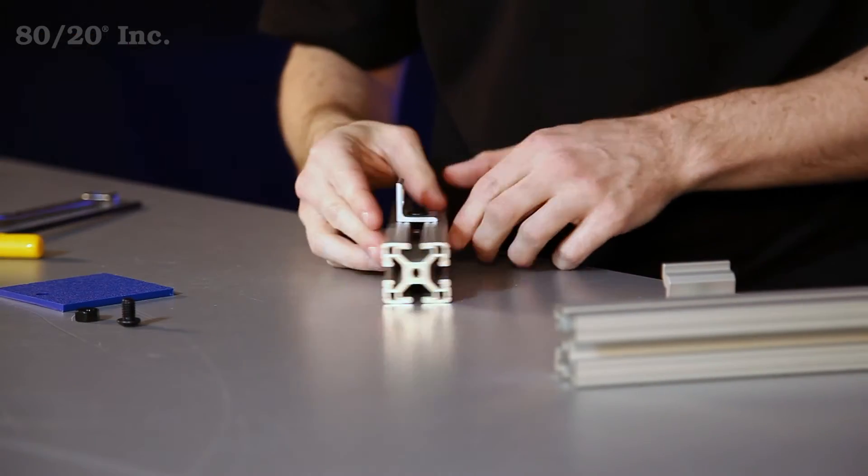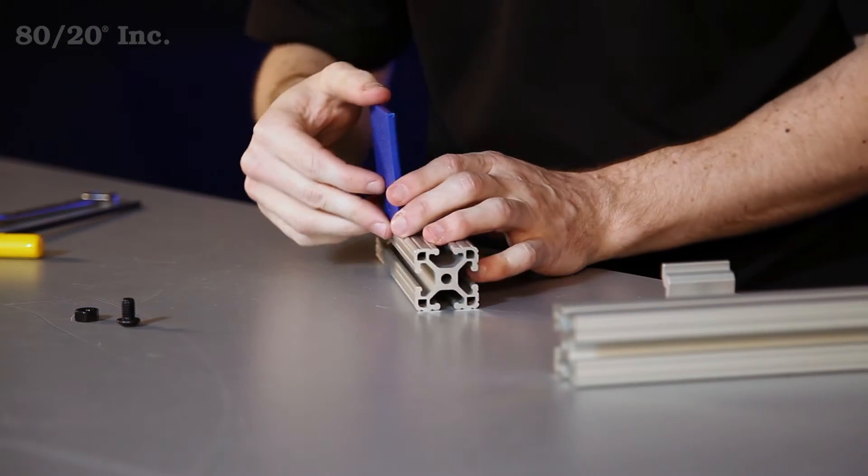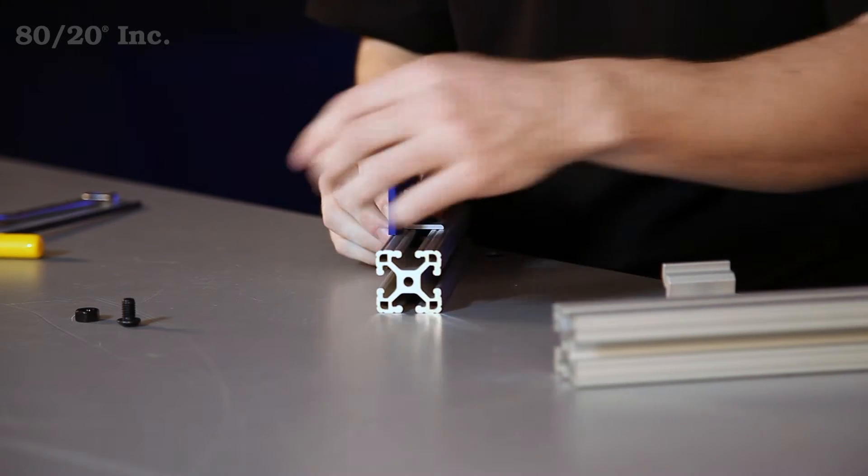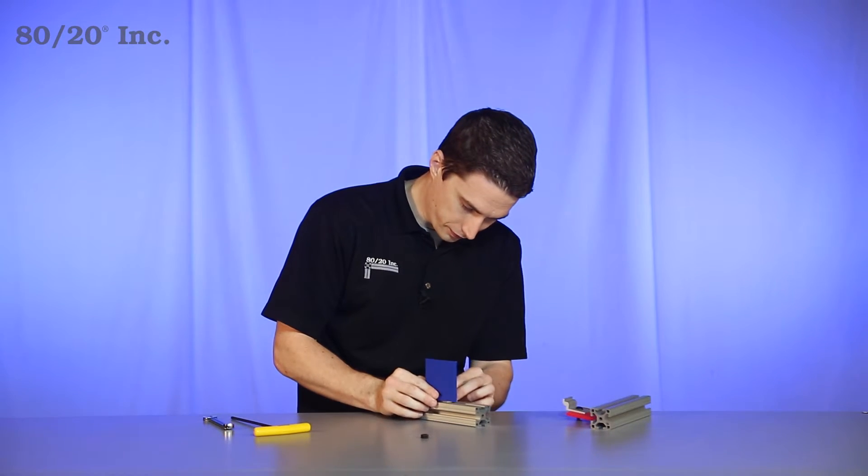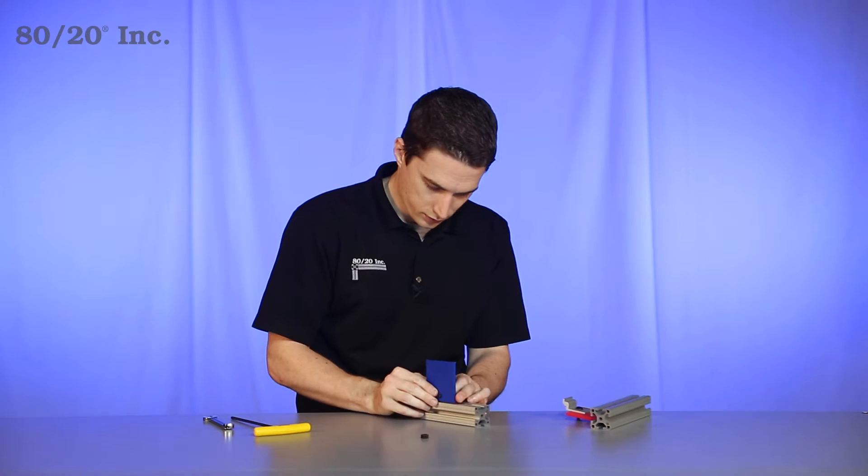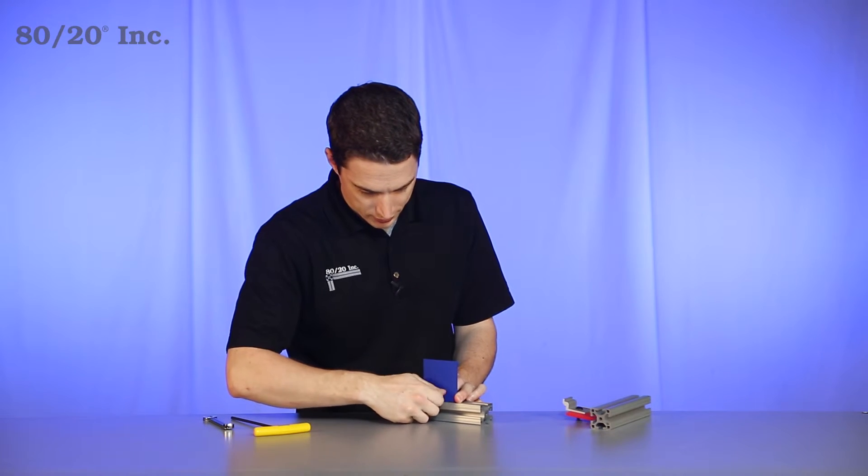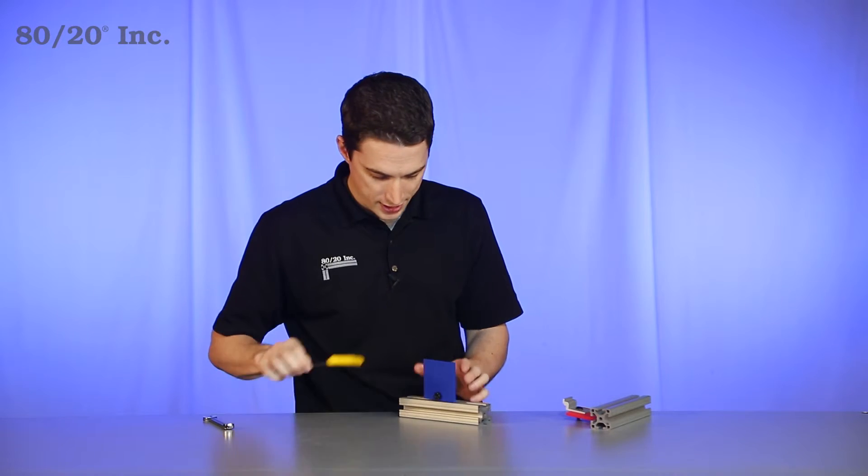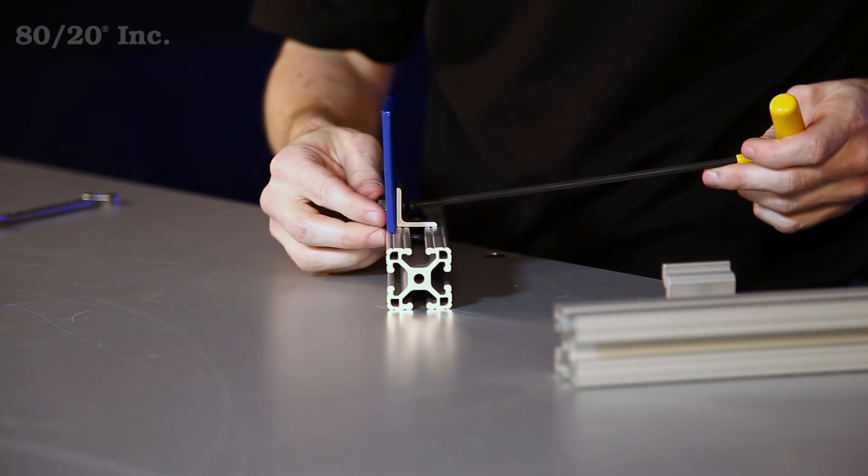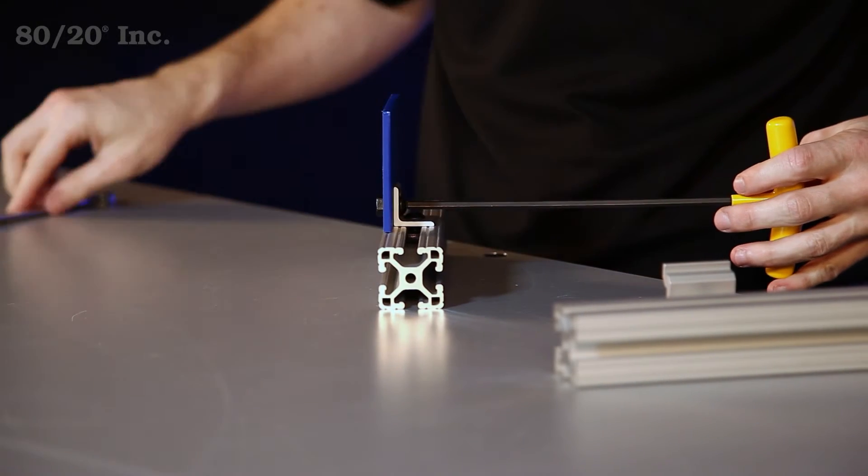Now once you have that tightened down, we'll take our panel and line it up with the bracket, and we'll feed our bolt through. Once you have the bolt in there, take your hex nut, and you'll hand tighten that down, and then you'll take a wrench and tighten it down the rest of the way.